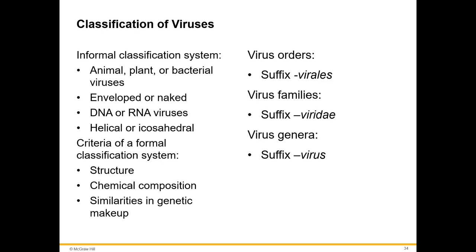Virus orders end in 'virales,' virus families end in 'viridae,' and virus genera end in 'virus.' We don't have domains, kingdoms, or phylums when we talk about viruses or classes, but we do have orders, families, and genera. Orders end in 'alis' or 'virales,' families end in 'viridae,' and genera end in 'virus.'